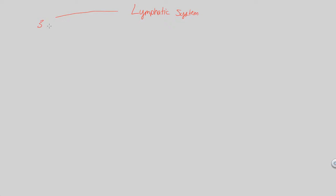This system has three main functions. Number one, the job of the lymphatic system is to collect and return interstitial fluid — the ISF lying around that's not going back into the blood — to the blood. About 15% of ISF stays outside of the cells and has to be returned. This overall maintains fluid balance in the body.